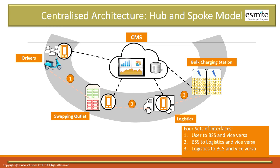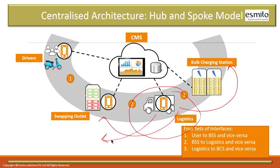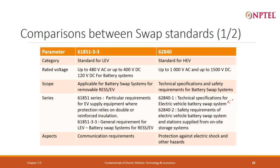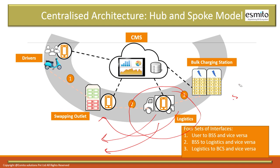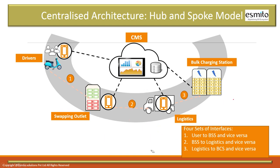The second system is the centralized architecture, where batteries are charged at one station and distributed to different locations. Here the logistics leg comes into picture. A logistics driver goes to the bulk charging station, collects batteries, and drops them at multiple swap stations. Whatever distribution is happening must be continuously tracked and controlled — at any given point in time, you must know the status of all batteries.